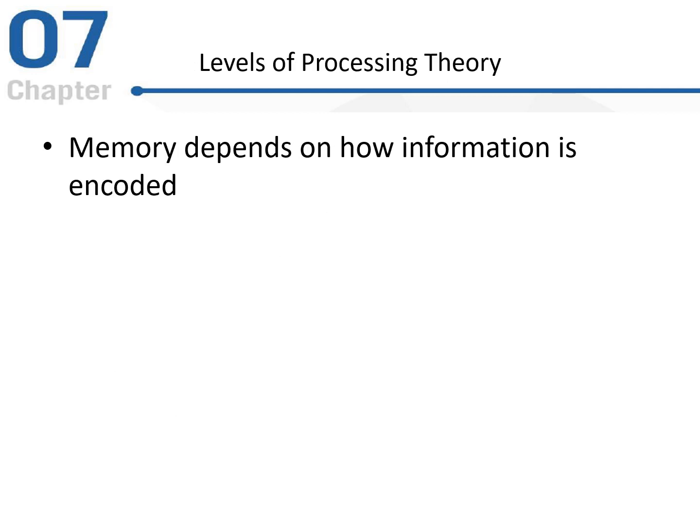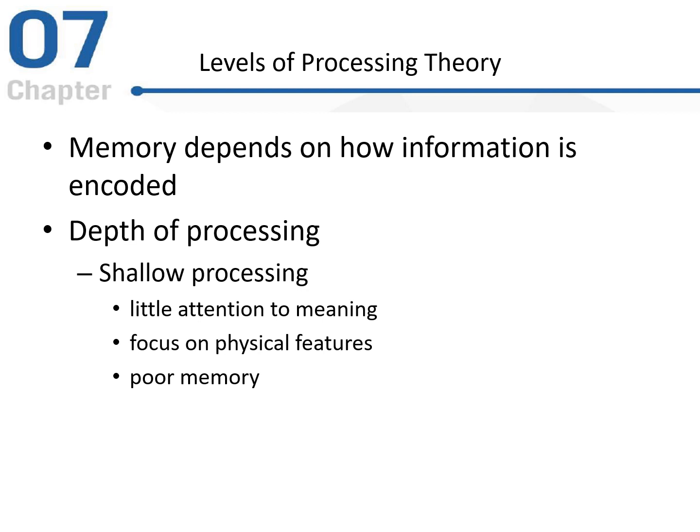If we look at levels of processing theory, this particular theory says that memory depends on how information is encoded. Specifically, we look at the depth of processing that occurs when we're trying to get information into long-term memory. We can have shallow processing, and this is where we are paying very little attention to the meaning of the information that we're trying to encode. We're focusing more on just the basic physical features of the information, and typically what we see with shallow processing is poorer memory later on.